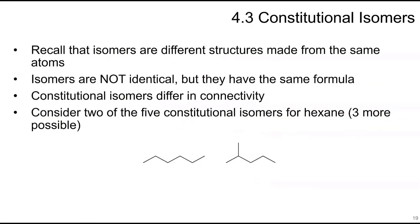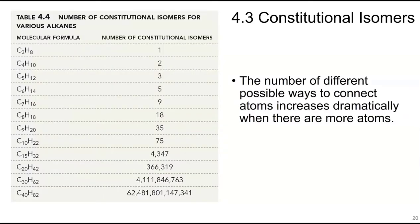Isomers are different structures made from the same atoms — not the same molecule, but they share the same formula. A constitutional isomer differs in connectivity. For example, two of the five constitutional isomers for hexane have the same formula but different connectivity. As carbon number increases, the number of possible constitutional isomers increases dramatically — C₃H₈ has one, C₉ has 35.